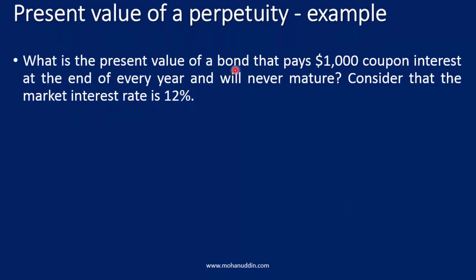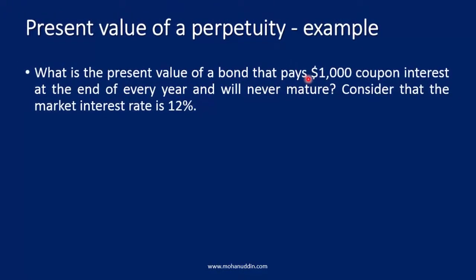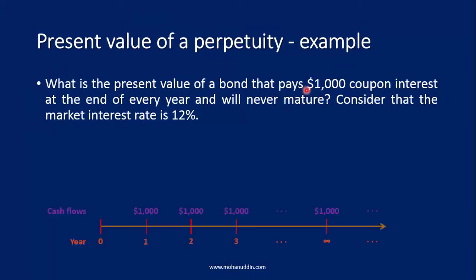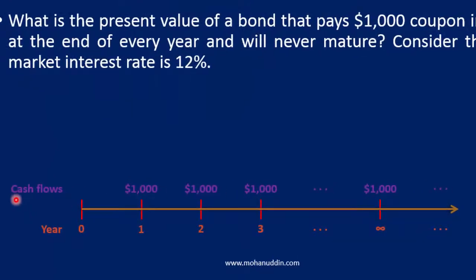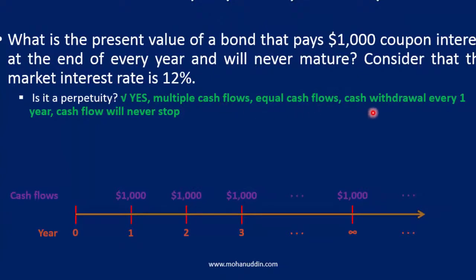Let us look at an example. What is the present value of a bond that pays a $1,000 coupon interest at the end of every year and will never mature? The bond will continue forever. The market interest rate is 12%. Here, $1,000 is the cash flow coming every year at the end of every year. The cash flow timeline shows $1,000, $1,000, $1,000 continuing forever. Before applying the formula, we confirm this is a perpetuity: it has equal cash flows every year, and the cash flows will never stop.